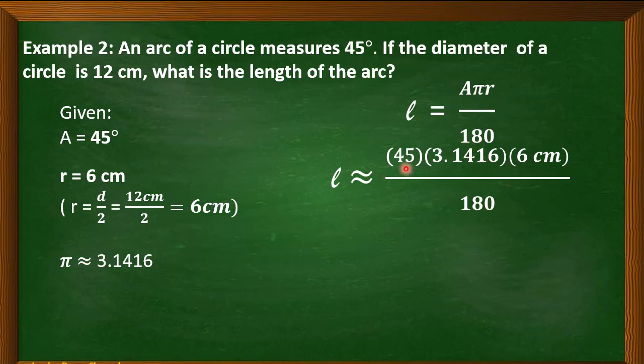Now, we will multiply 45 times 3.1416 times 6, that is equal to 848.232 cm.